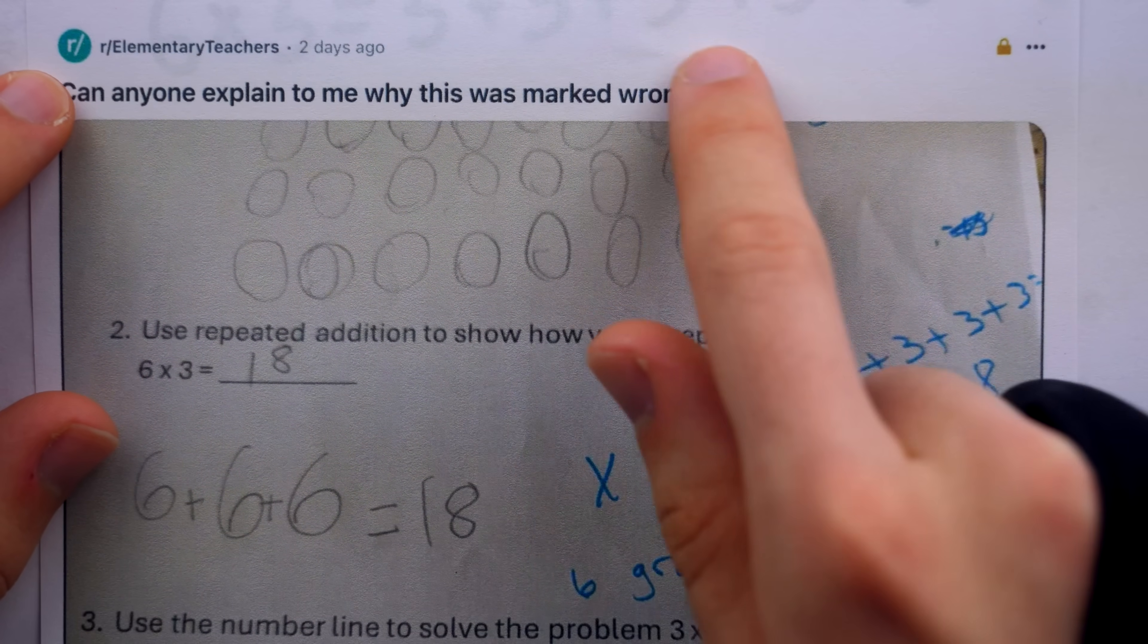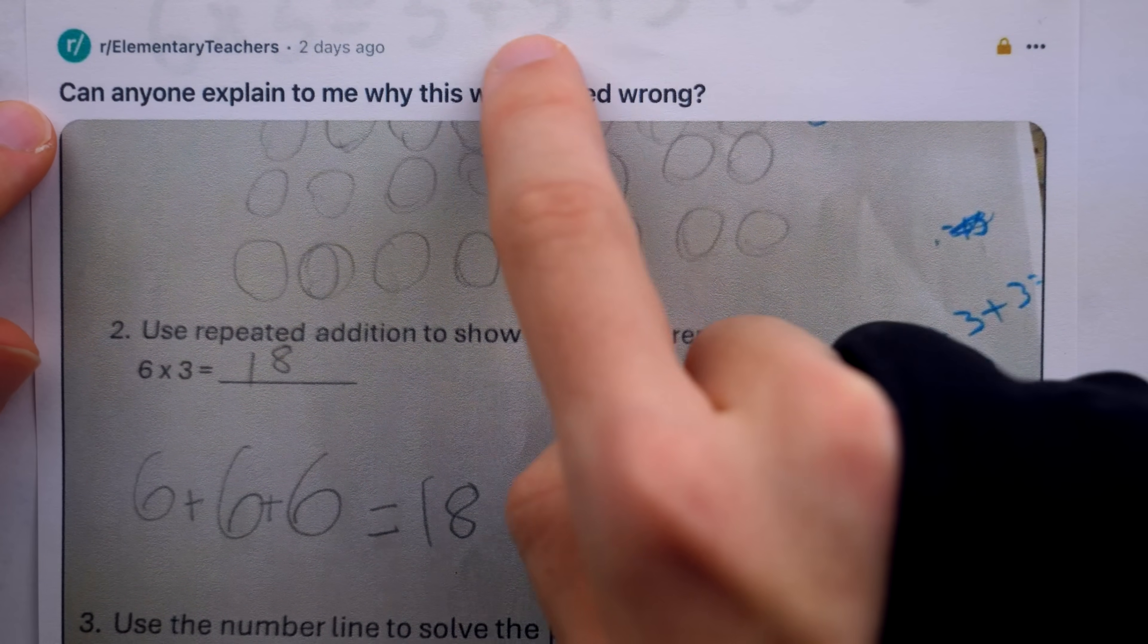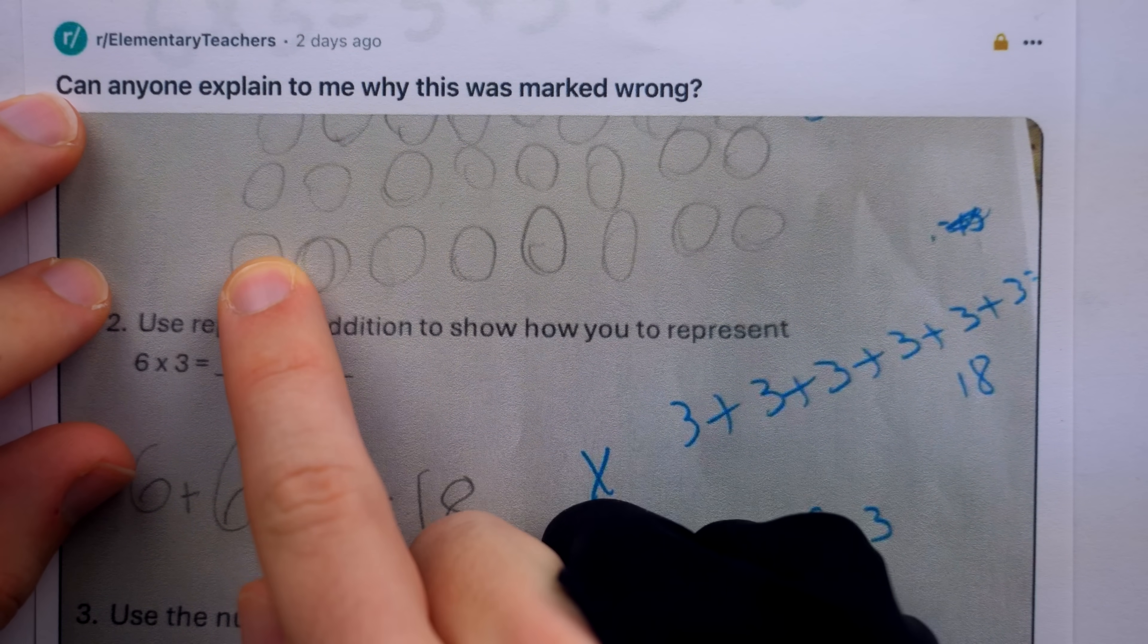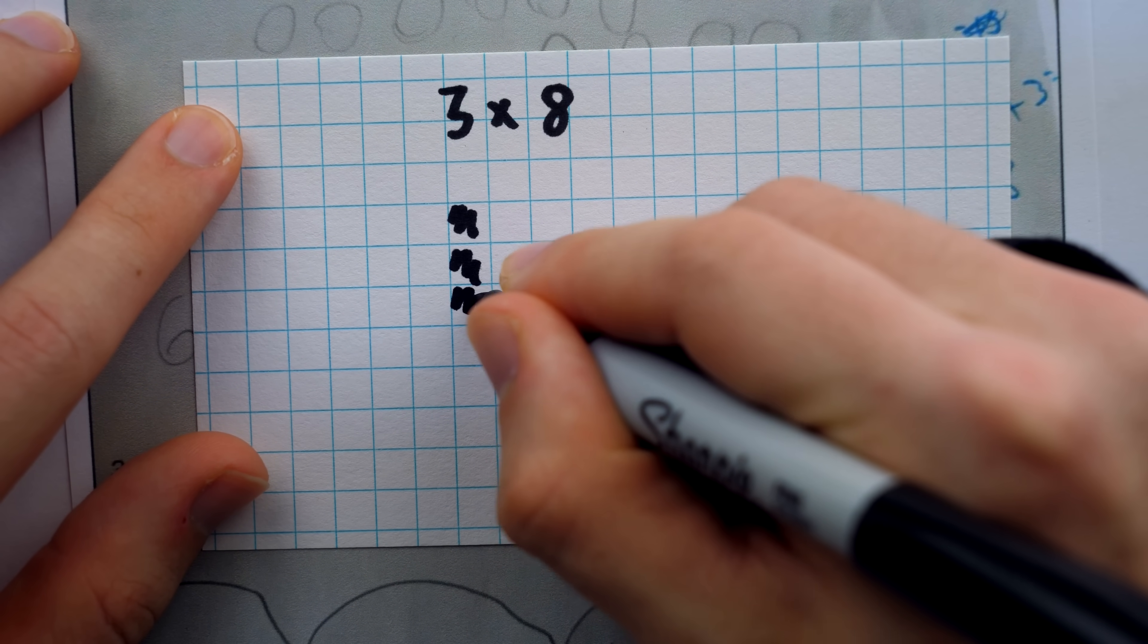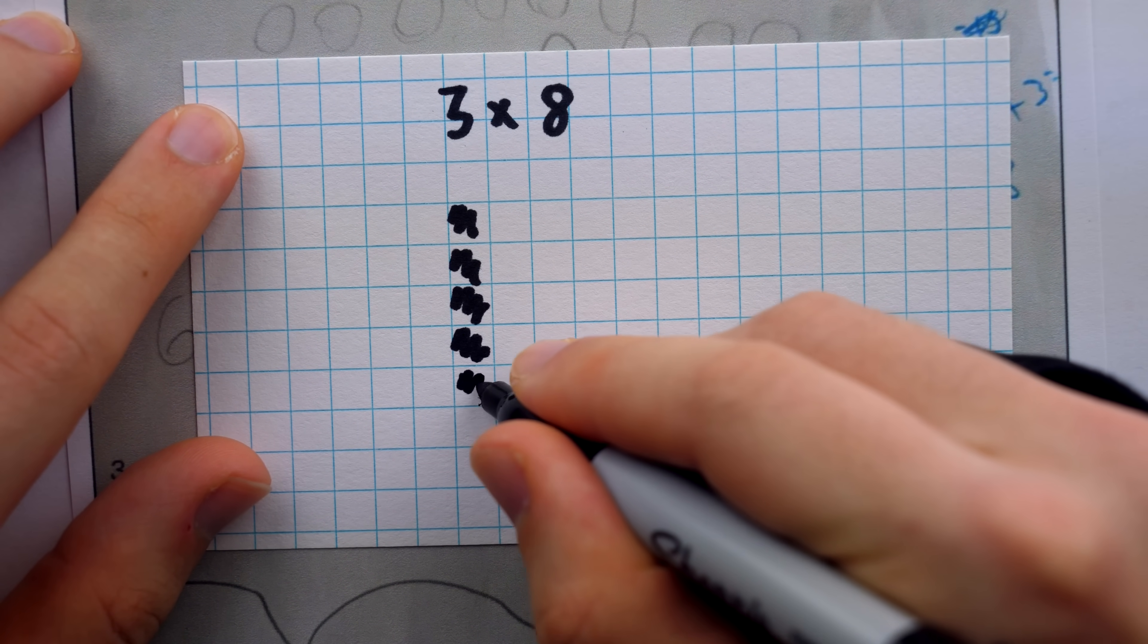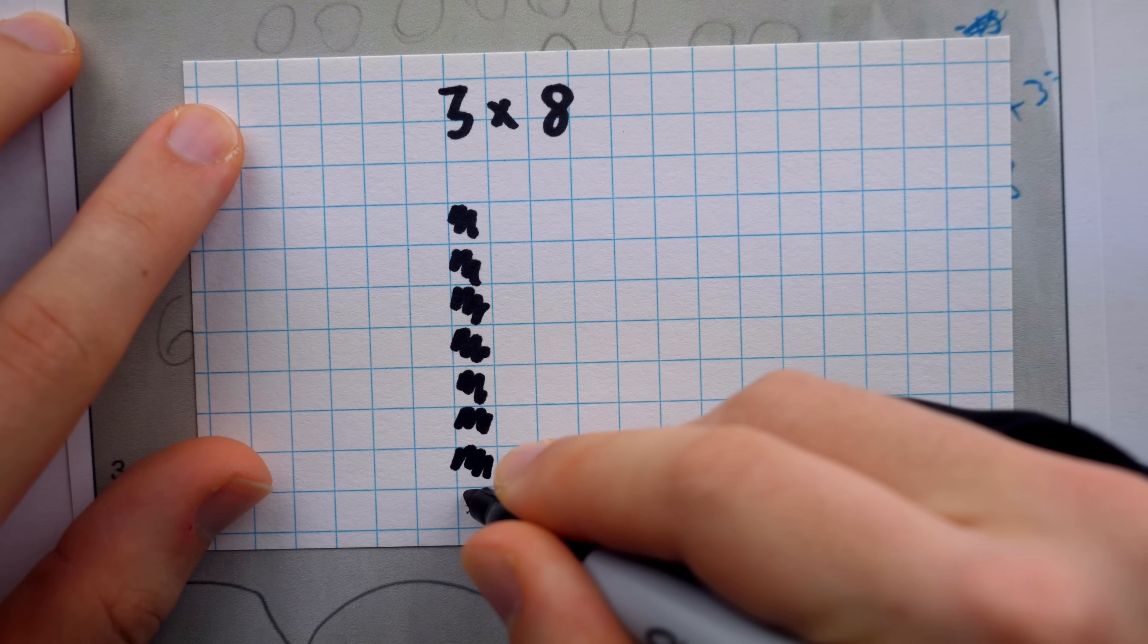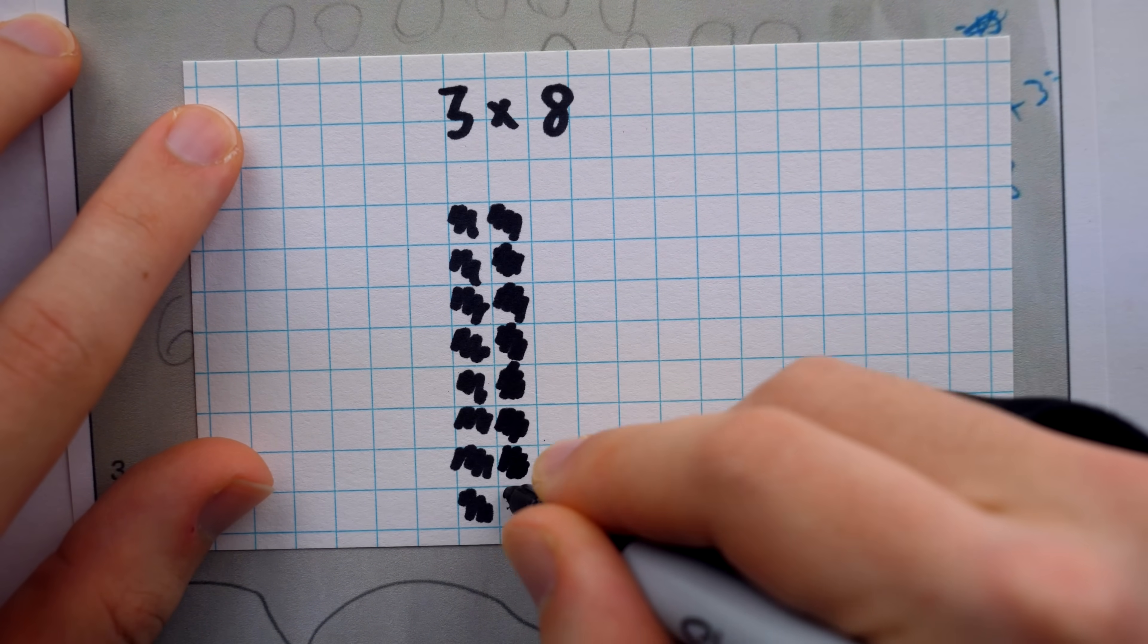Interestingly, when doing the repeated jumps on a number line, the student seems to be conceiving of multiplication the way the teacher wants. 3 times 5 is 3 jumps of 5. And then with the rectangular array, you have perhaps the easiest way to see that order of multiplication doesn't matter.